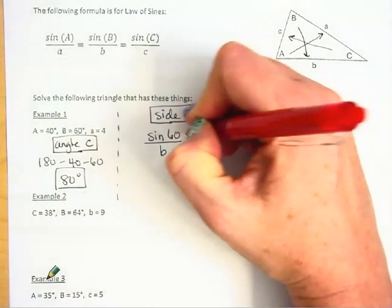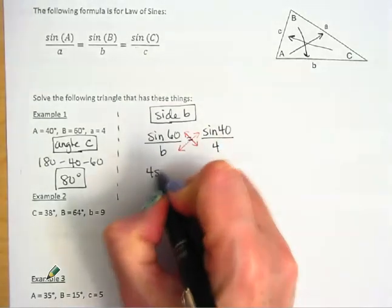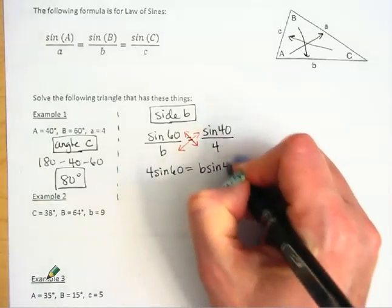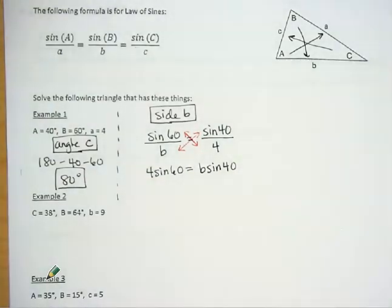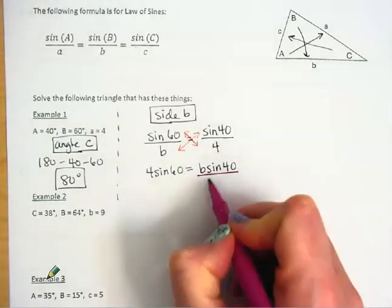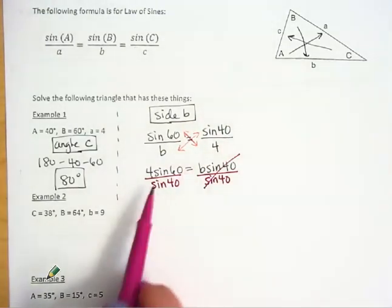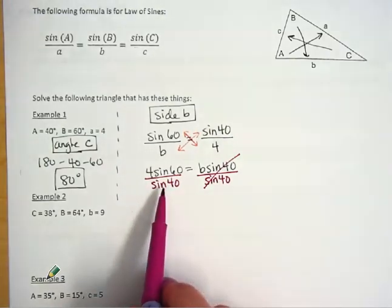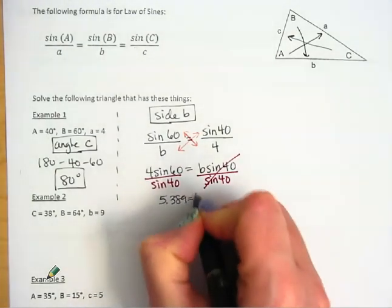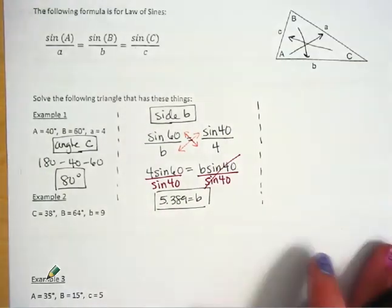We're going to use cross-multiplying to solve this proportion. Multiplying across one way gives four times sine 60, and multiplying across the other way gives b times sine 40. To solve for b, I divide both sides by sine 40, which cancels, leaving just b. On the calculator, that's four times sine of 60 divided by sine of 40, which gives approximately 5.389 units.